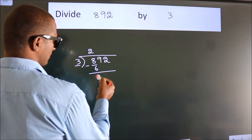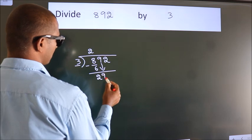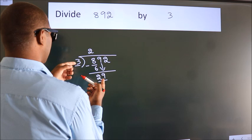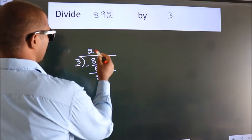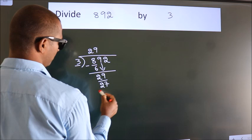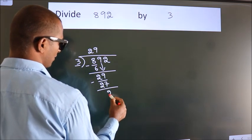After this, bring down the beside number. So 9 down, so 29. A number close to 29 in 3 table is 3 9's, 27. Now we subtract. We get 2.